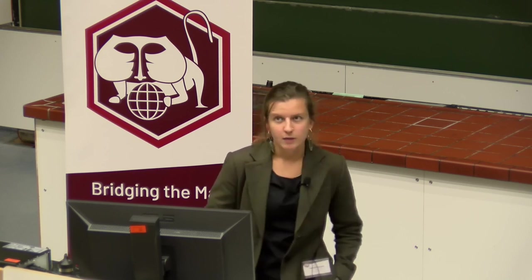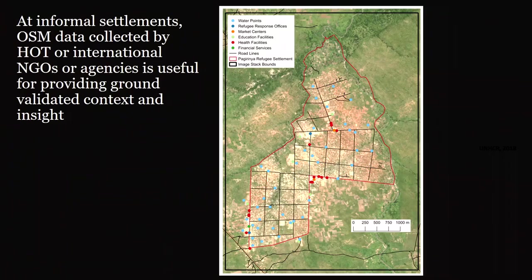This is a map of Pajrina refugee settlement in northern Uganda, which shows a sampling of the possible nodes that could exist in OSM — water points, market centers, educational facilities, health facilities, and financial services. This speaks to what OSM offers that you can't get from satellite imagery.